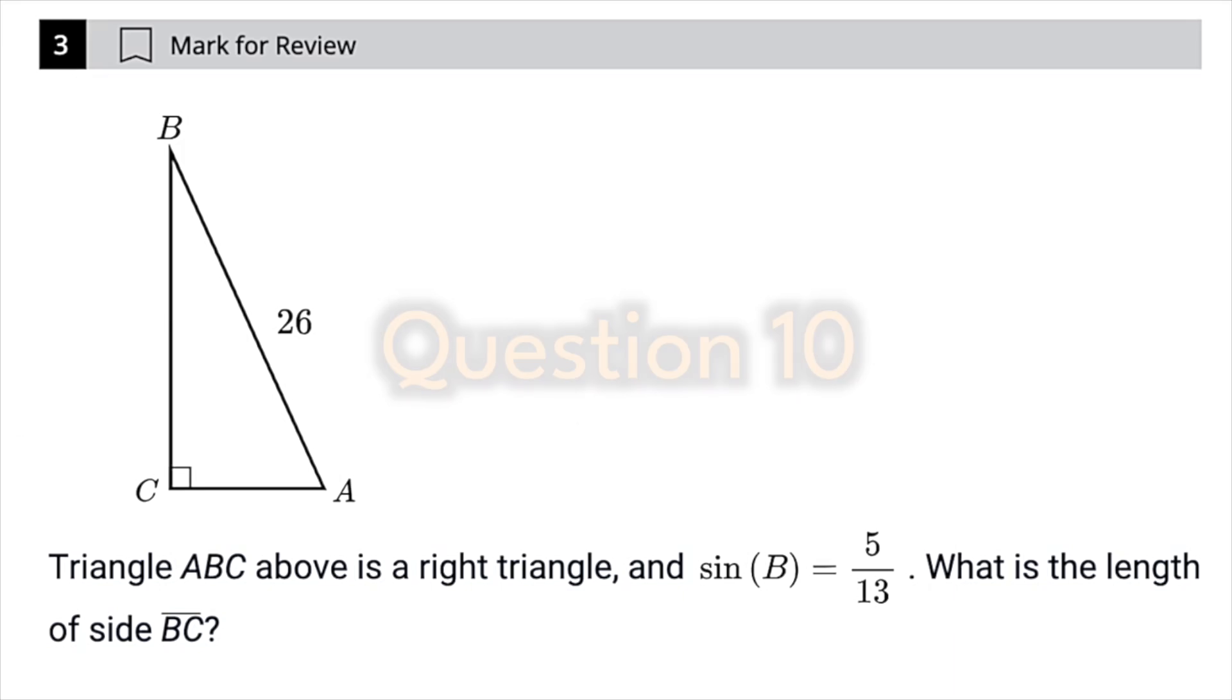All right, so fastest way to solve this guy is to, first of all, look at sine of b is 5 over 13. So just remember sine. We want to remember SOH, SOH being SOH, which means sine of something is the opposite over the hypotenuse. So in this case, sine of b would be the opposite. That's across the street from b. So c a over here, over the hypotenuse, which is our longest side, in this case, b a. And we're going to ignore that 26 for a second. Just remember that this is equivalent to 5 over 13.